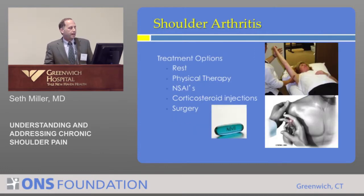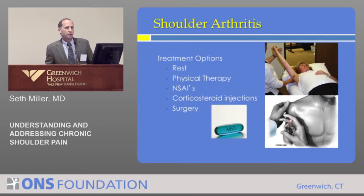How do we treat it? Initially we try standard things — having patients stop paddle tennis, overhead sports, or weightlifting. We often use physical therapy to help reestablish range of motion. Physical therapy for arthritis is a bit of a double-edged sword because you can easily flare the joint, so the therapist has to go gradually and just work on range of motion without over-stressing the joint; otherwise patients feel worse.